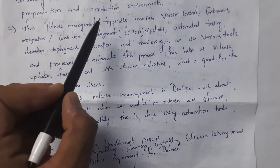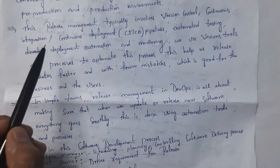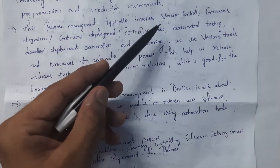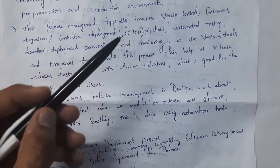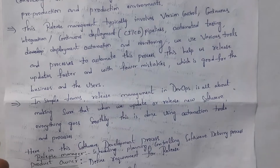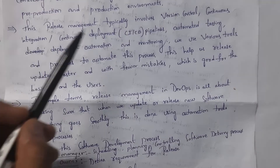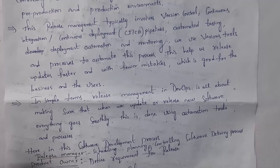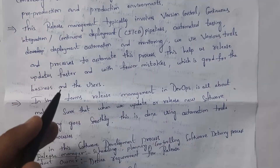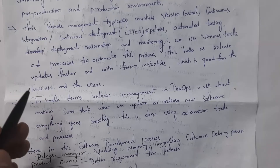Release management typically involves version control, continuous integration and continuous deployment pipelines, automated testing, deployment automation, and monitoring. Version control is nothing but placing our code in Git and GitHub. After placing our code in GitHub, CI testing and deployment are done automatically using various automation tools in DevOps. By using automation tools, work completes very fast with very few or no errors, which is good for both business and users.